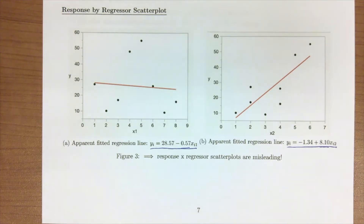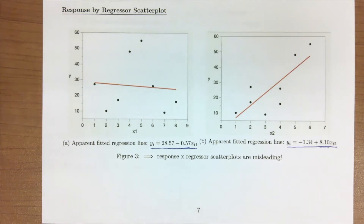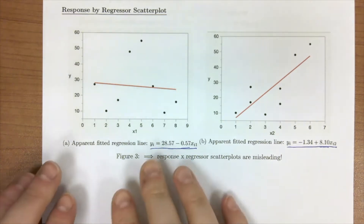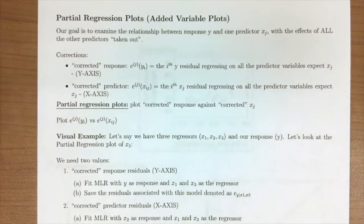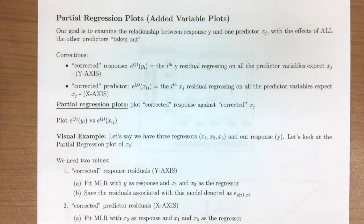So in multiple linear regression, just plotting the response by the regressor isn't going to provide us with a lot of valuable information like it did in simple linear regression, because the regressors are working together to explain what's going on in our response. To combat this issue of x1 and x2 working together, we introduce partial regression or added variable plots. Our goal here is to examine the relationship between the response and one predictor with the effects of all the other predictors taken out.